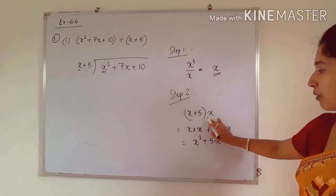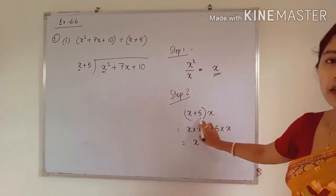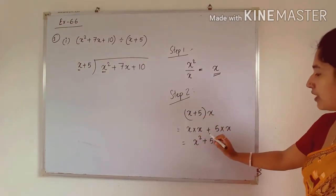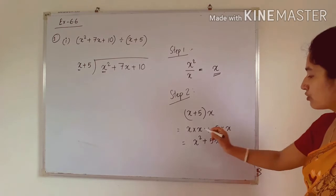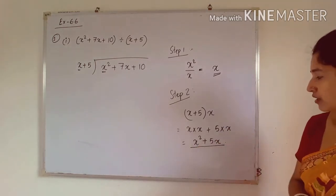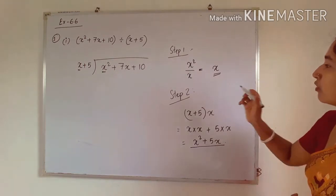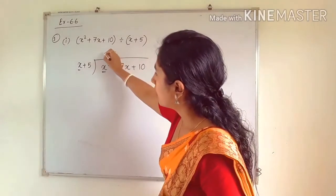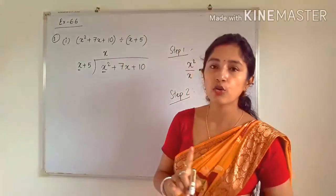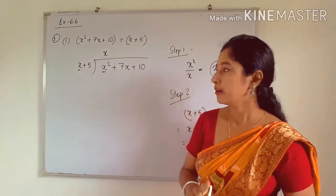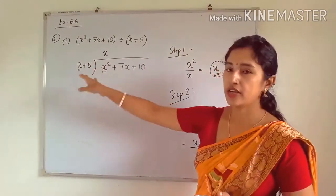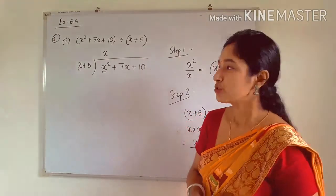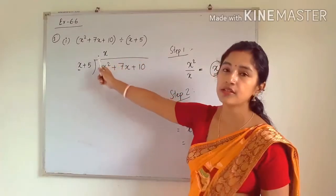We apply the distributive property — we multiply x by x, then x by 5, giving us x² + 5x. The value from step 1 (which is x) is written in the quotient as the first term. Since both dividend and divisor are polynomials, the quotient will also be a polynomial, and its first term is x.